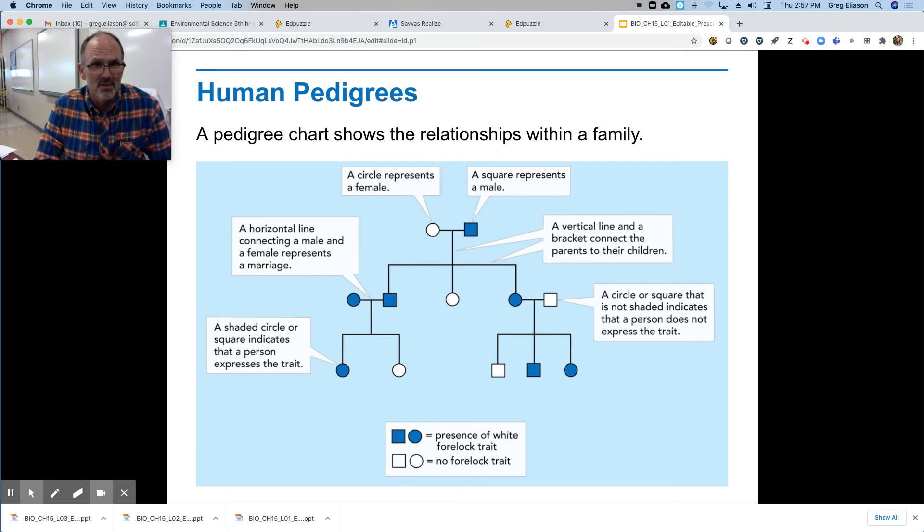A circle represents a female and a square represents a male. A colored in circle means that is what trait they have. If it's an open circle, or a non-colored circle, it doesn't have the trait. So in marriage, there's a line that connects those two. And then you can have a shaded set. Again, those shaded individuals are presenting the trait, okay?